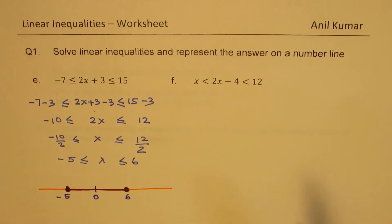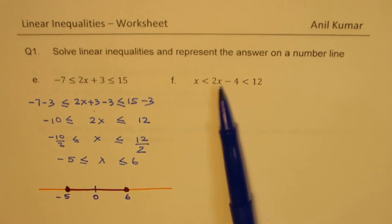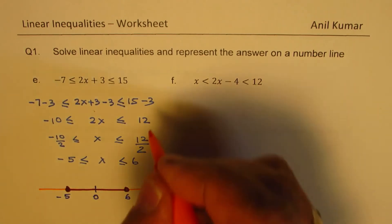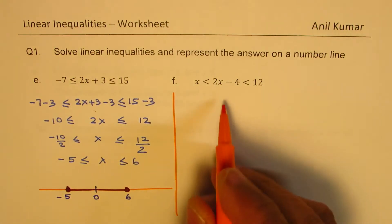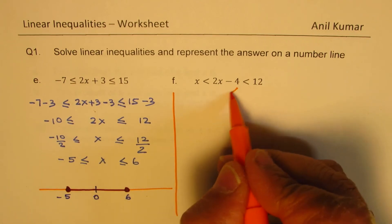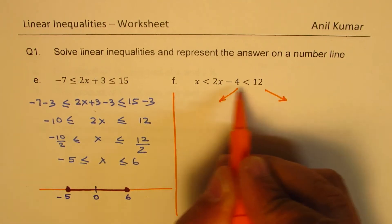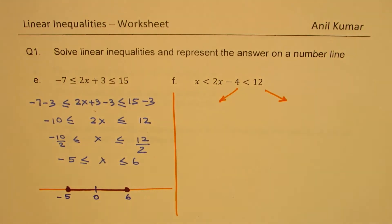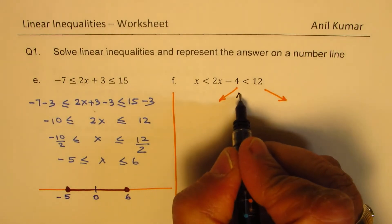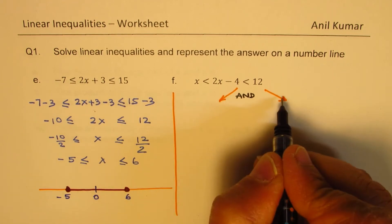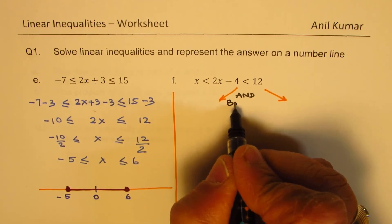The next question has x appearing in two parts. In that situation, we split the double inequality into two separate inequalities and solve them individually, then apply the AND condition — meaning both must be true simultaneously.